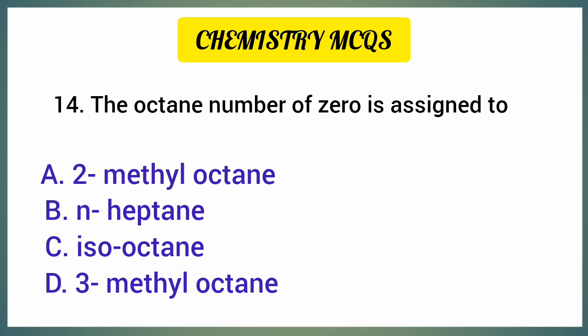The octane number of zero is assigned to — correct option is option B: N-Heptane.